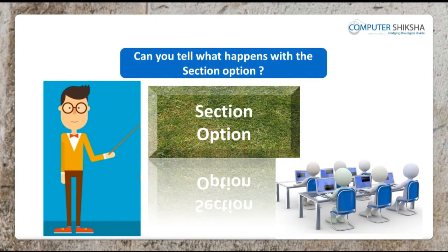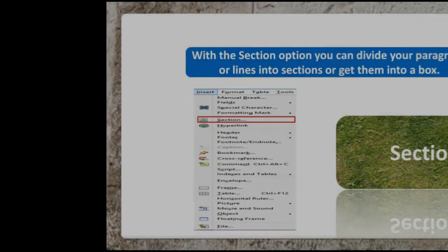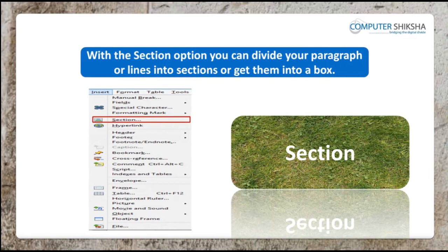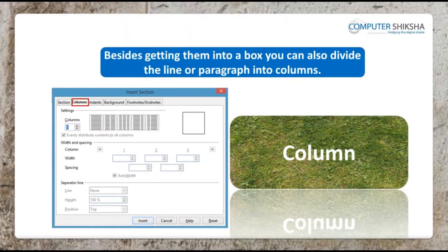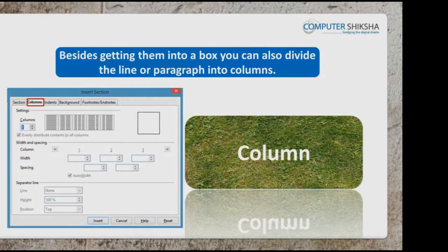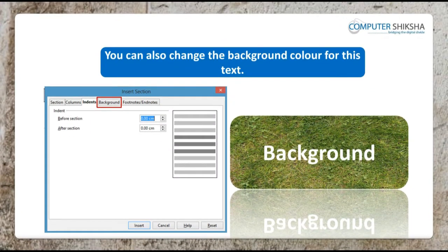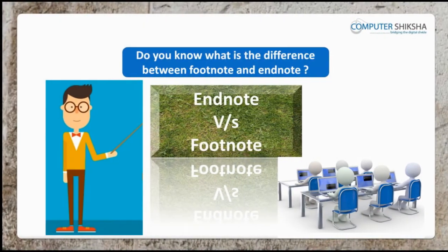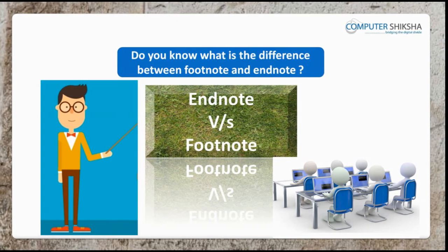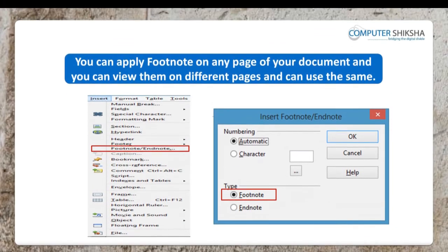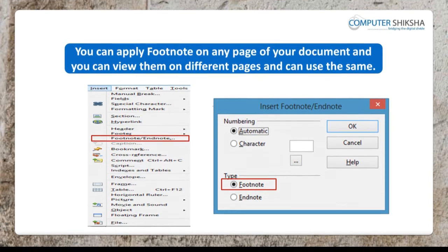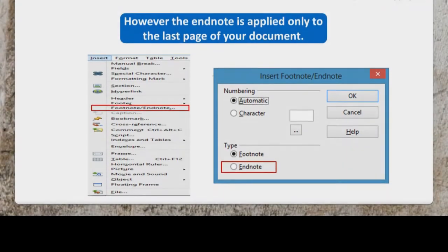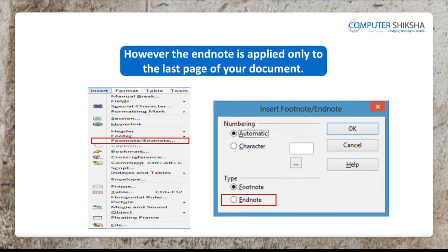Can you tell what happens with the section option? With the section option, you can divide your paragraph or lines into sections or get them into a box. Besides getting the columns, you can give an indent or margin also on the lines. You can also change the background color. Do you know what is the difference between footnote and endnote? You can apply footnote on any page of your document and view them on different pages. However, the endnote is applied only to the last page of your document.